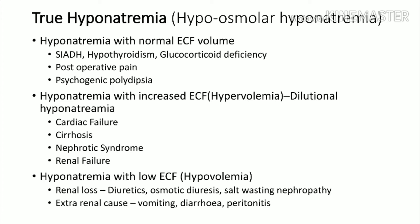Hyponatremia with low ECF occurs when both water and sodium are lost. Renal causes include diuretics, osmotic diuresis, and salt-wasting nephropathy. Extra-renal causes include vomiting, diarrhea, and peritonitis. So in summary, there are three types: hyponatremia with normal water, high water, or low water.